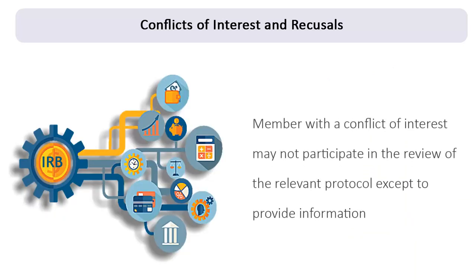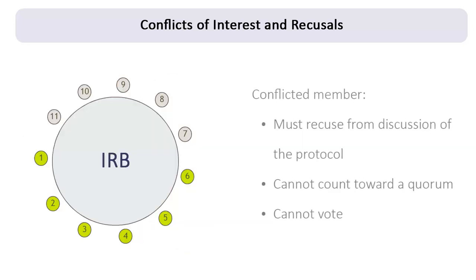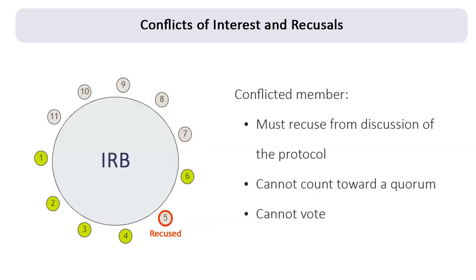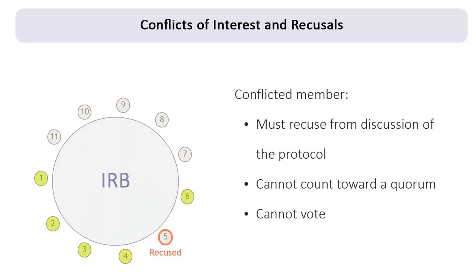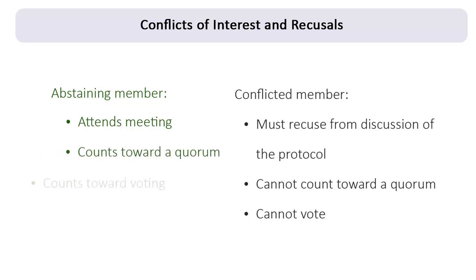An IRB member who has a conflict of interest with a particular research protocol may not participate in the IRB's review of that protocol except to provide information requested by the IRB. An IRB member must recuse herself or himself from the discussion of the research protocol and cannot count toward a quorum or vote with respect to that protocol. Note that this is quite different from the situation when a member abstains from voting, in which case the abstaining member counts towards establishing quorum and calculating what constitutes a majority vote.